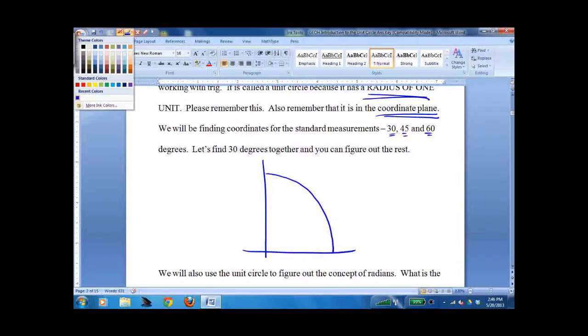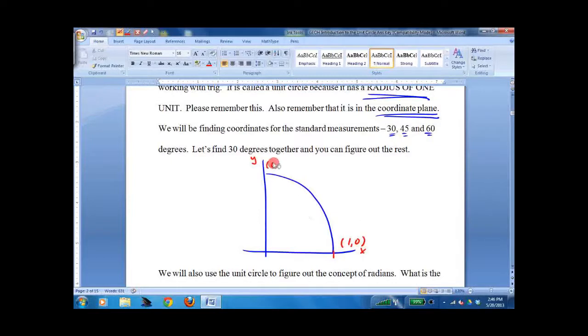So remember this has a radius of 1 and we're on the XY coordinate plane. This is the number 1, 0 and this is the number 0, 1. That's right there and right there.